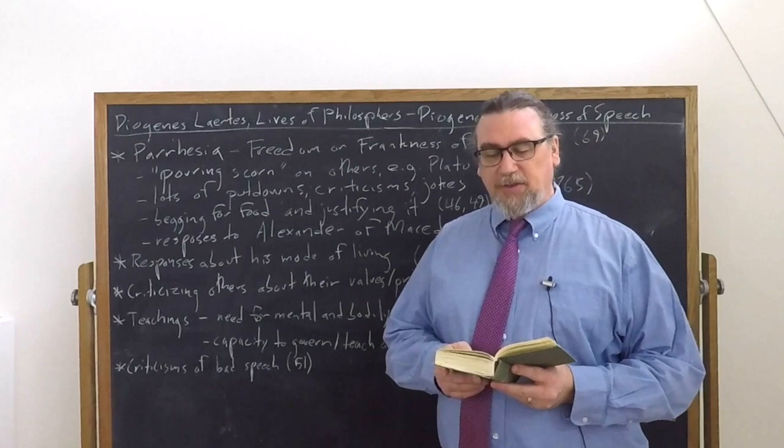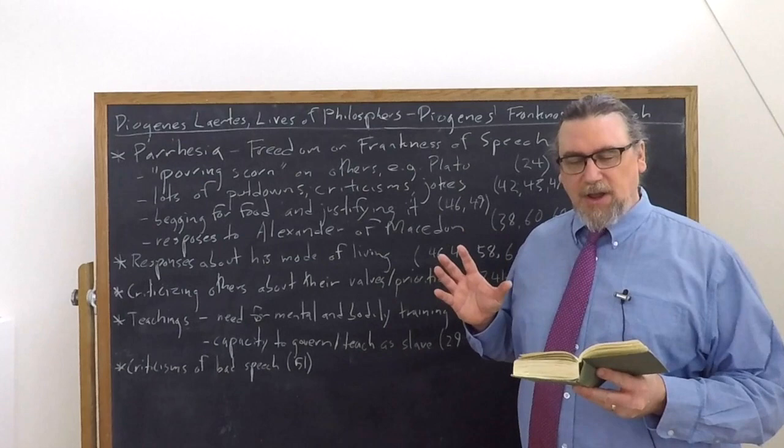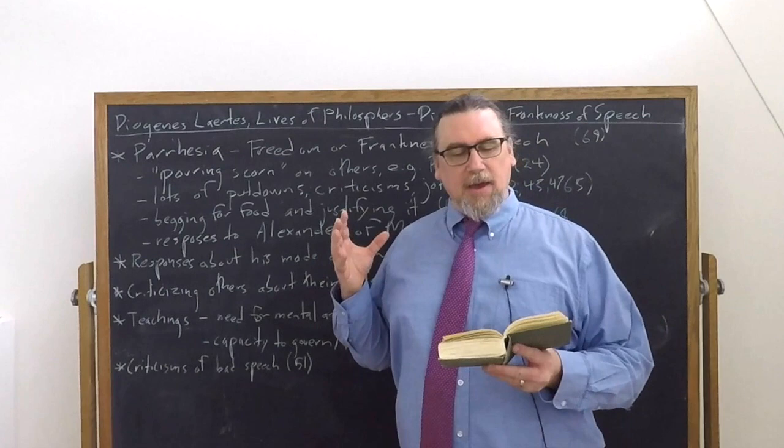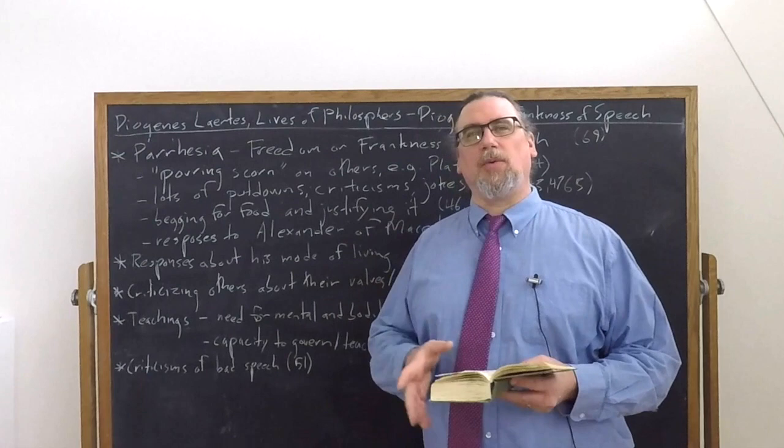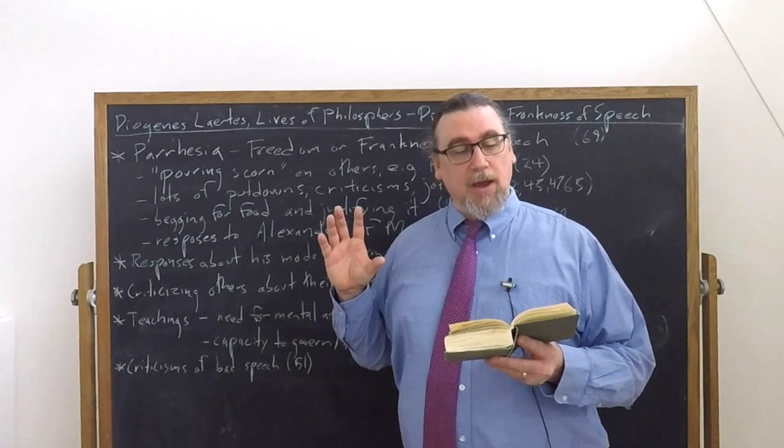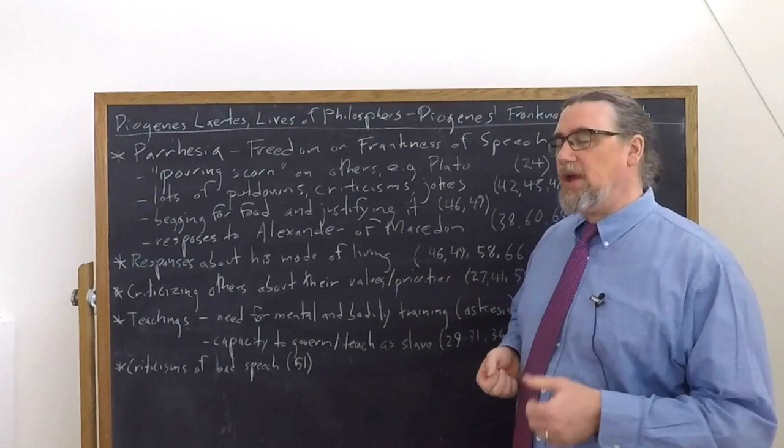And within Diogenes Laertes, there's a discussion among the many things that he attributes to Diogenes, where Diogenes is asked, what is the most beautiful or the best thing in the world or for human beings, Cali stone, which means the beautiful, the fine, the noble. And what does he say? Parrhesia. Parrhesia is something that we translate as alternately freedom of speech or frankness of speech. And both of those are decent translations.